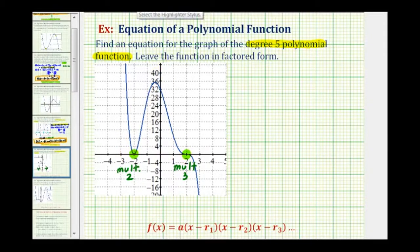And because we have these zeros of the function, we can find the equation of the function in factored form using the form given here below, where r sub one, r sub two, r sub three, and so on, are the roots or zeros of the function, and a is a constant.